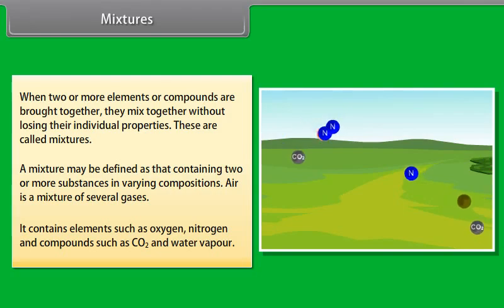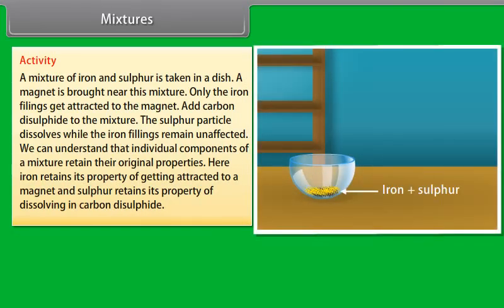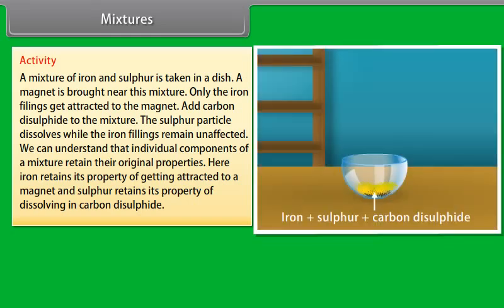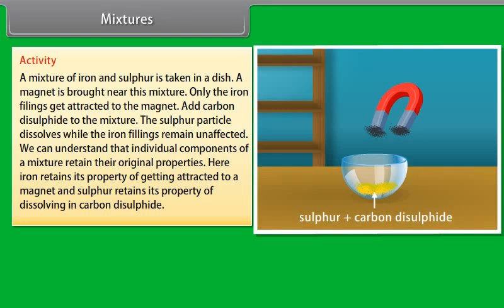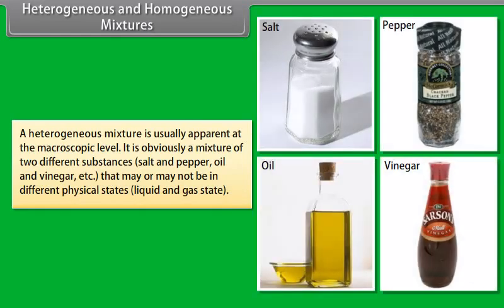A compound is a pure substance made up of a chemical combination of two or more elements in a definite proportion. A compound contains two or more kinds of atoms chemically combined together to form new molecules. Water is one such example — a pure substance made up of hydrogen and oxygen combined in the ratio of 2:1 by volume and 1:8 by mass. If two atoms of hydrogen are combined with one atom of oxygen under special conditions, one molecule of water is formed. Therefore, water is a compound, formed by the combination of hydrogen and oxygen in the proportion 1:8 by weight.